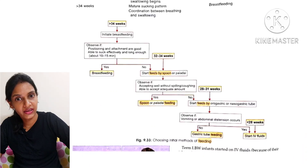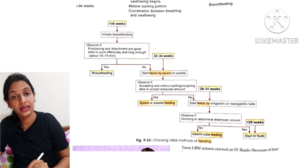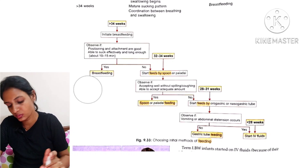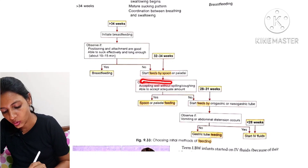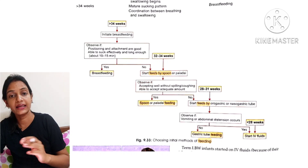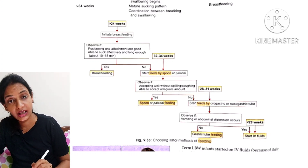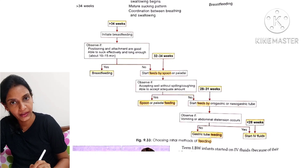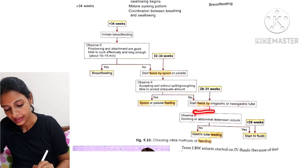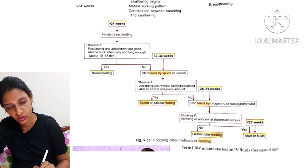Question 25: Feeding methods are important for premature babies. If the baby is born after 34 weeks, initiate breastfeeding and check positioning, attachment, and whether the baby can suck effectively for 10–15 minutes. If unable to maintain adequate sucking, feed by spoon or paladai. If the baby is born between 32–34 weeks, start spoon feeding and observe whether the baby accepts adequate amounts without spilling. If the baby is born between 28–31 weeks, use orogastric or nasogastric tube feeding.